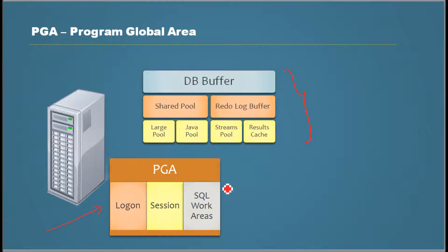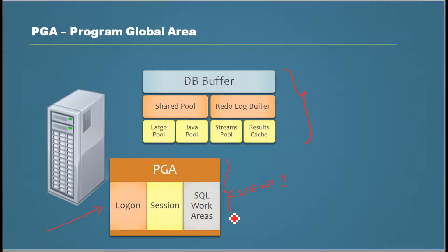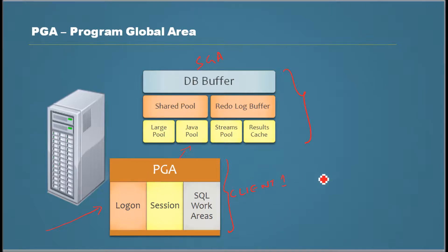That server process houses the PGA. So it's like this: client one gets an entire server process, and that server process works with SGA. If there is client two, another server process would be given to client two as well.